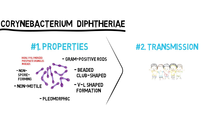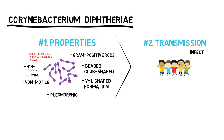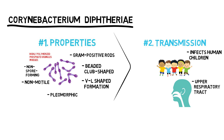Transmission. Human children are the only natural host of Corynebacterium diphtheriae. Both toxigenic and non-toxigenic organisms reside in their upper respiratory tract and are transmitted by airborne droplets. The organism can also infect the skin at the site of a pre-existing skin lesion, which occurs by poor skin hygiene.